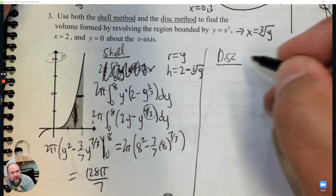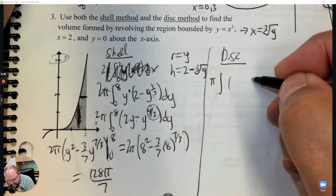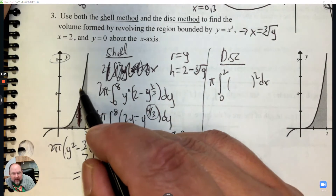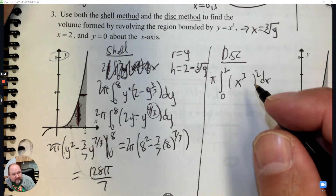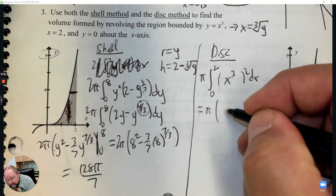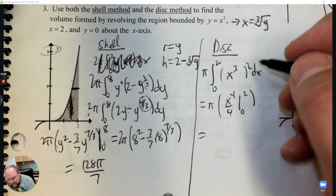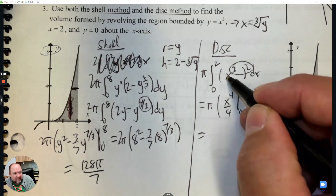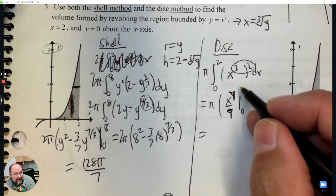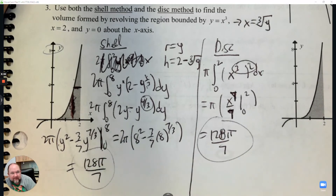Using the disk method instead - that's with circles, so it's perpendicular. The disk method uses π r squared, integrating from 0 to 2 using x values. The top subtract bottom is x cubed minus 0, which is just x cubed. Squaring gives x to the 6th. Integrating: add 1 and divide gives x to the 7th over 7 from 0 to 2. Plug in 2 and you get 128π/7. Notice the answer is the same for the shell method or the disk method.